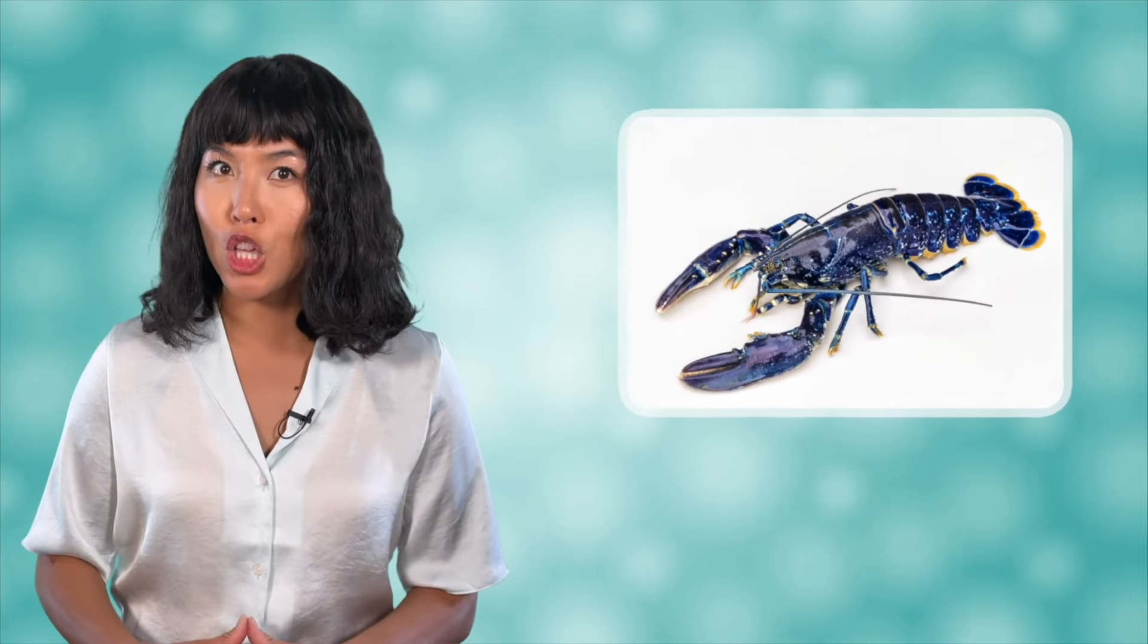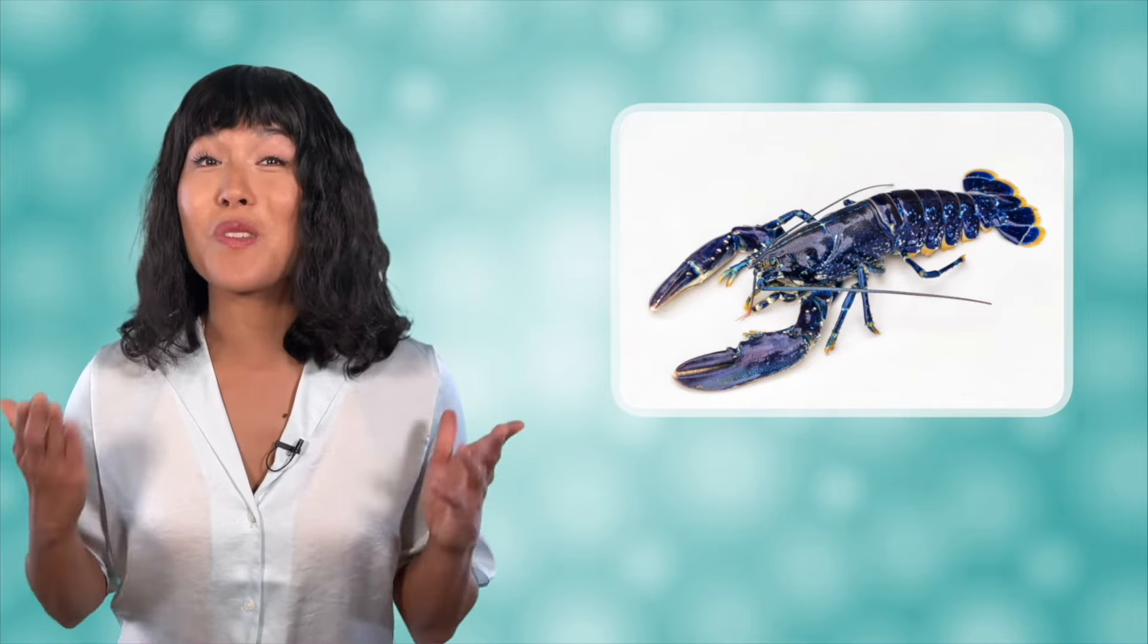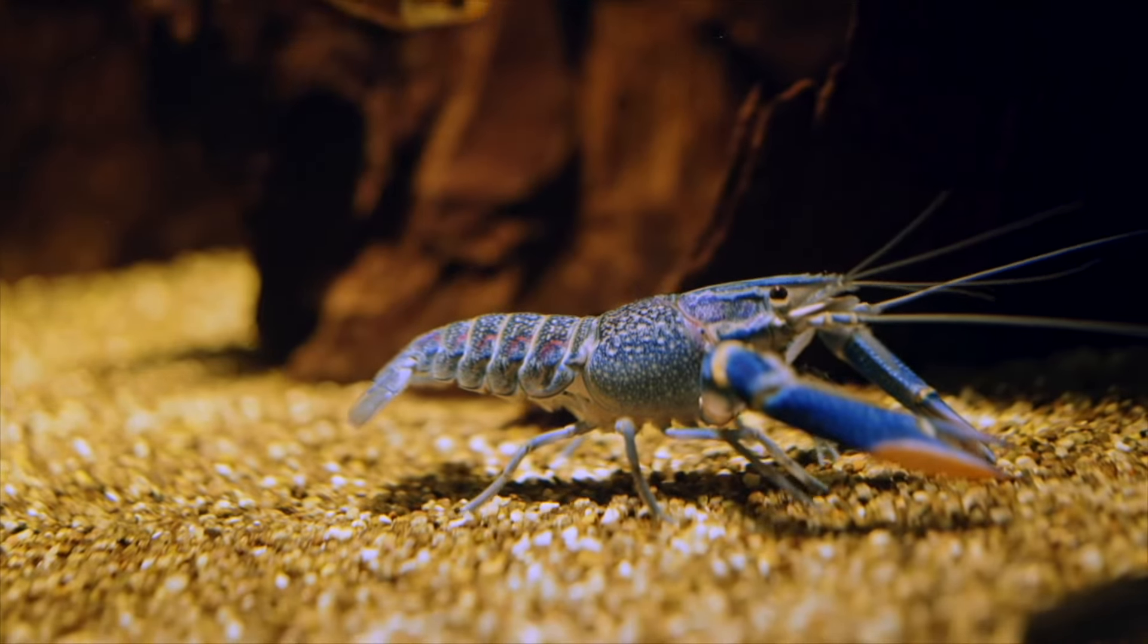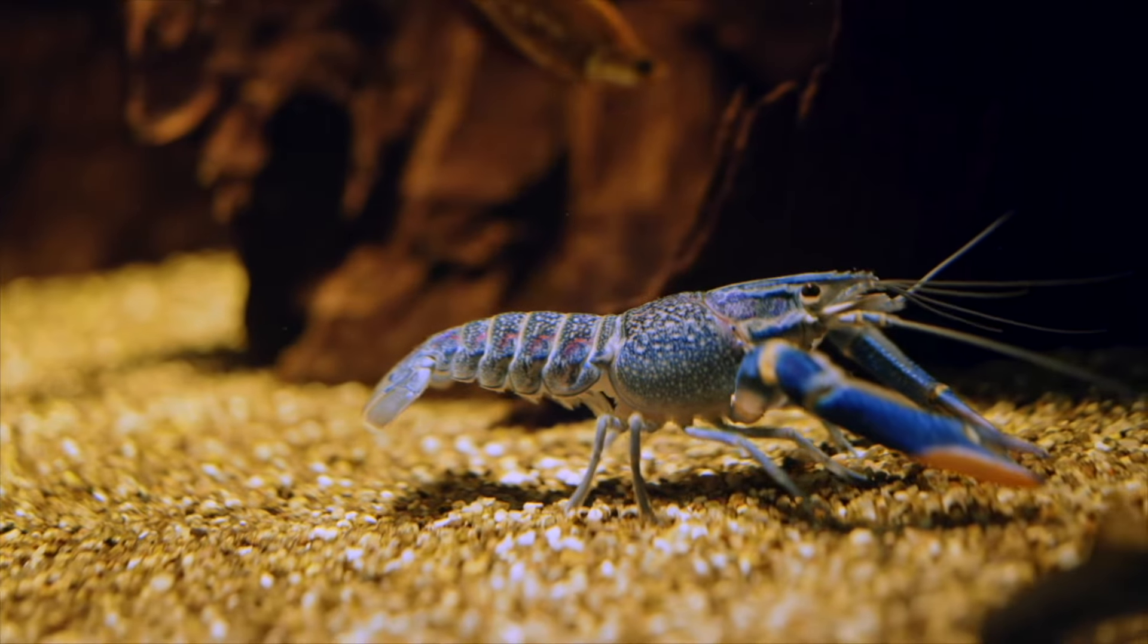Have you ever seen a lobster? What color are lobsters? I bet you said brown or red. The vast majority of lobsters are brown but turn red when they are cooked. Have you ever seen a blue lobster? They are rare but I promise this is a real picture. How do a small number of lobsters end up being blue?